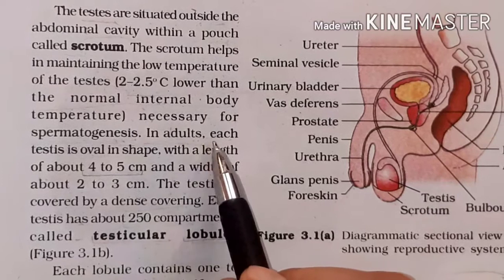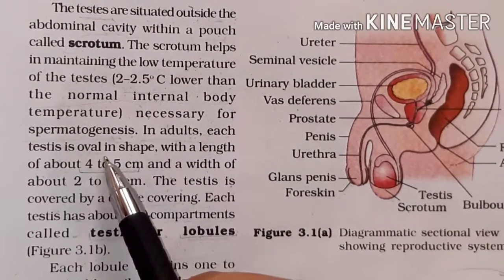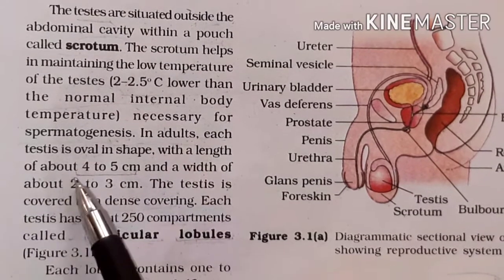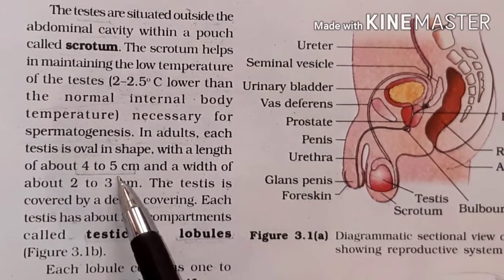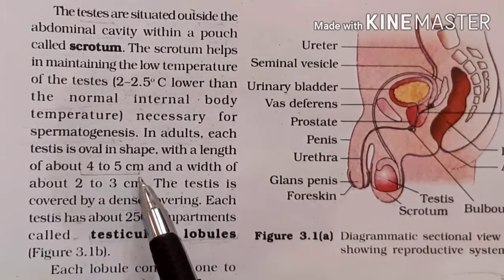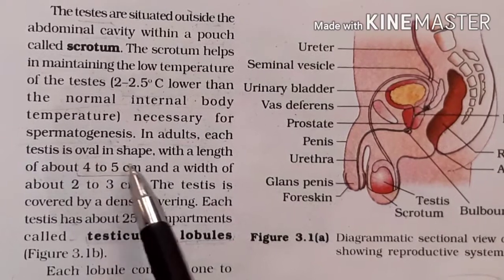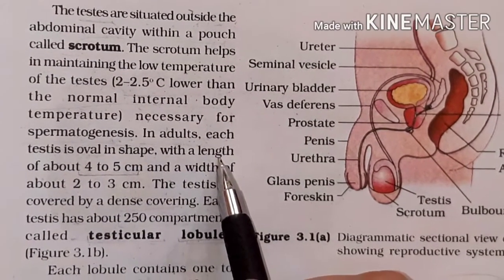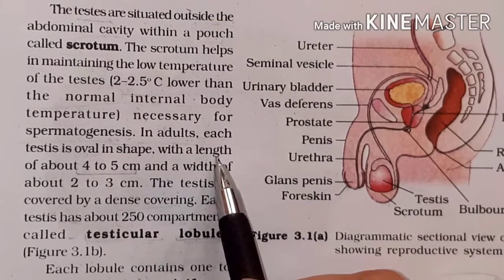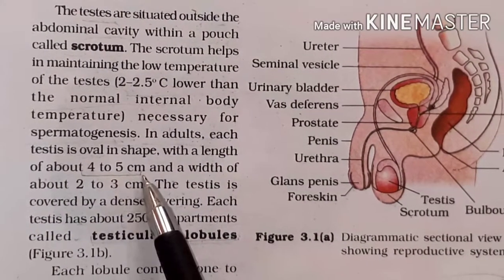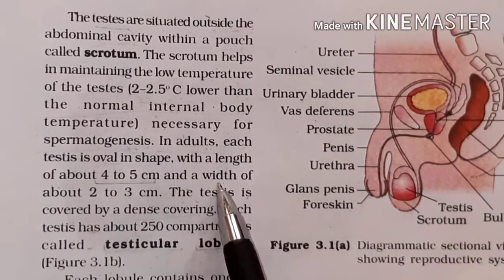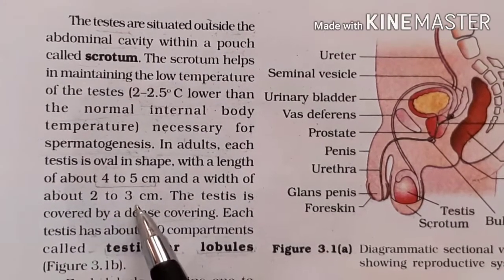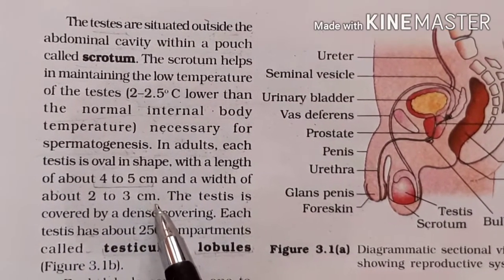Each testis is oval in shape with a length of about 4 to 5 cm and a width of 2 to 3 cm. Please note these dimensions.